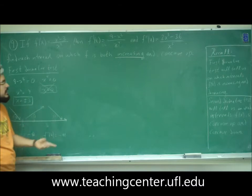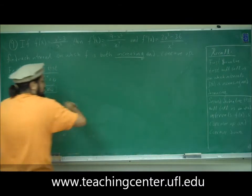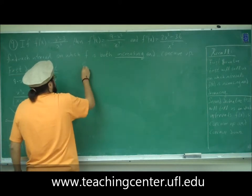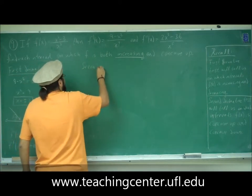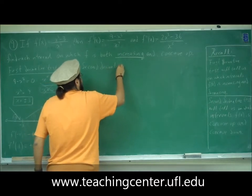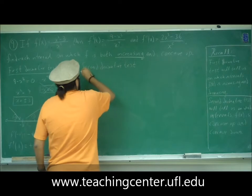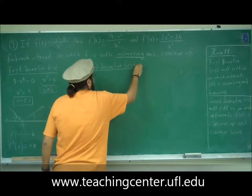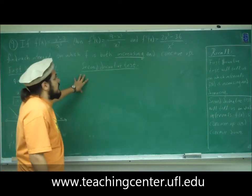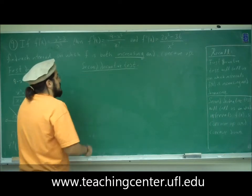So the function is increasing on (-3, 3). Now we need to find when it's concave up, so we apply the second derivative test. We find when f double prime equals zero and when it's undefined.